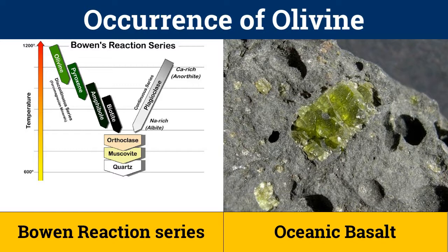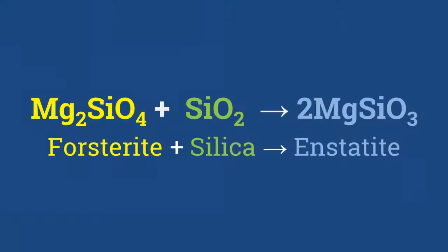To the right is a picture of olivine phenocrysts in basalt from Hawaii. Olivines had crystallized first in the basaltic rock, as evident from the Bowen's reaction series. Olivine, however, does react with the melt to form pyroxene.